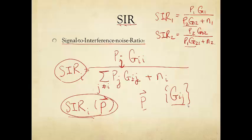And we are given all these receiver electronics and therefore their noise. So the Gs and the Ns are given constants. The Ps are what we'll be calling the optimization variables in transmit power control.